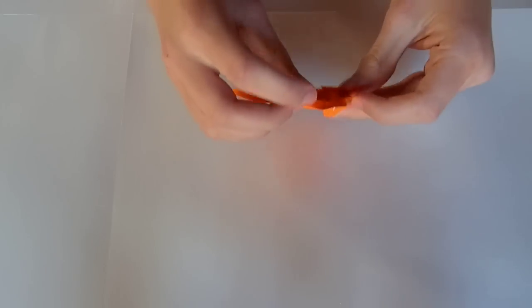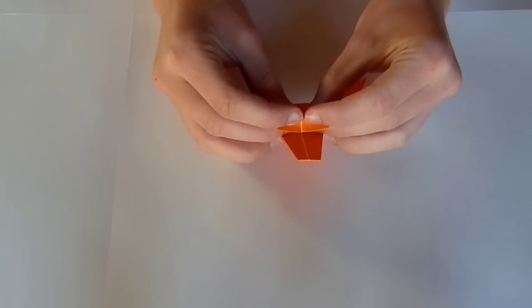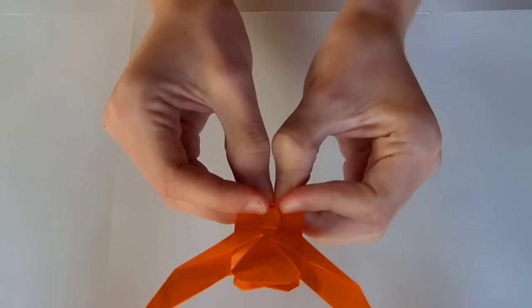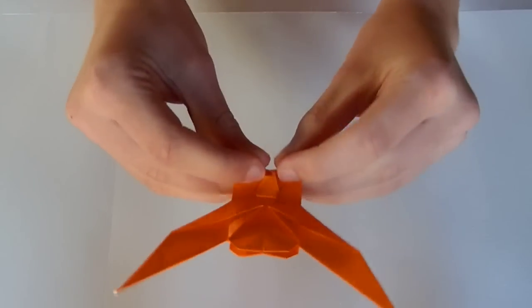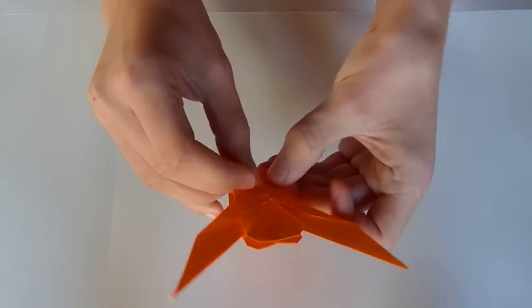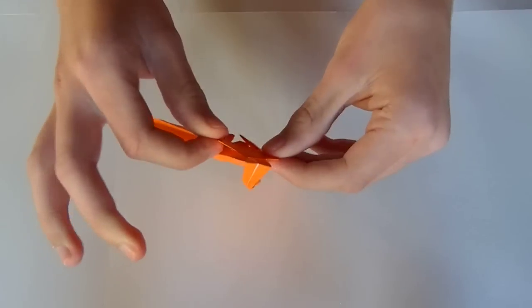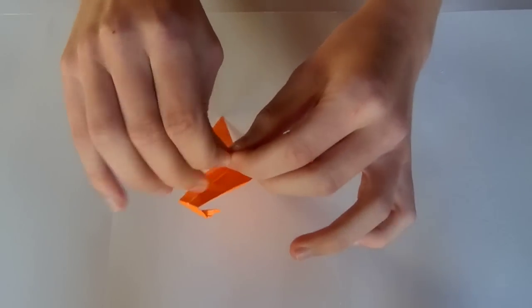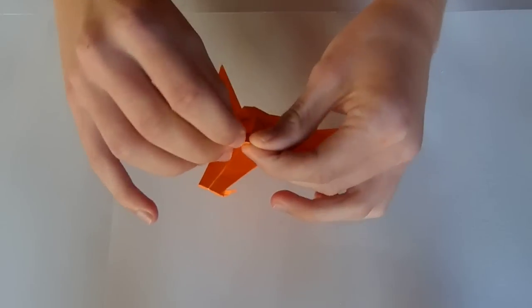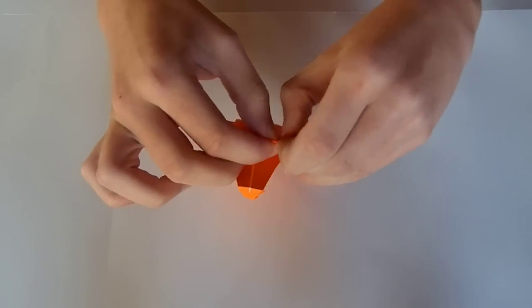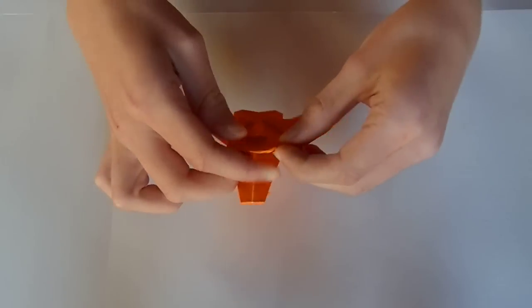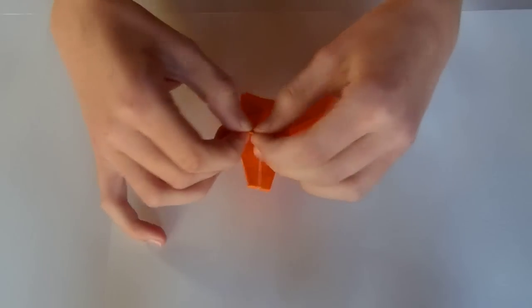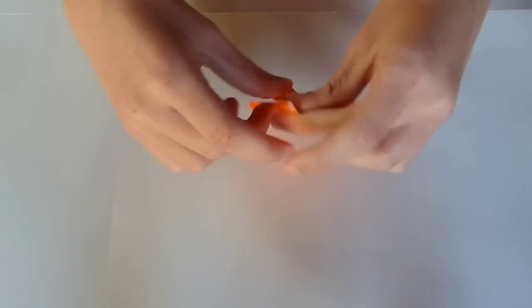Now you are going to make the mouth. So just make a pleat like this. And we are going to round up the head. So fold the corners in like this.